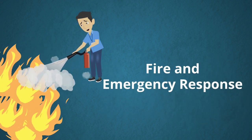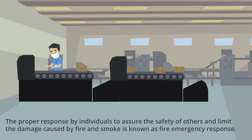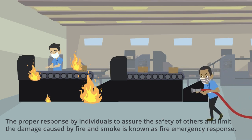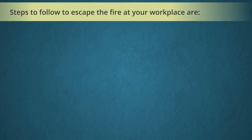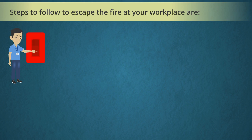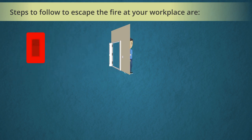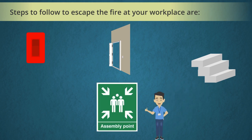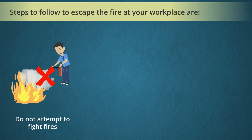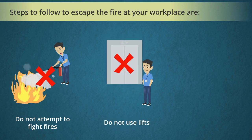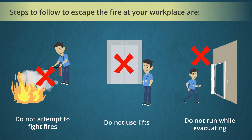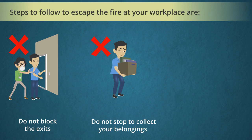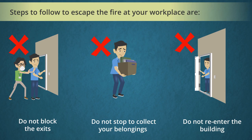Fire and emergency response is the proper response by individuals to assure the safety of others and limit damage caused by fire and smoke. Steps to follow: on discovering a fire, sound the alarm using one of the signaling points; leave the building by the closest exit using the staircase; report to the safe assembly point; follow instructions at the assembly point. Do not attempt to fight fires unless trained, do not use lifts, do not run while evacuating, do not block exits, do not stop to collect belongings, and do not re-enter the building until instructed by a member of the site team.